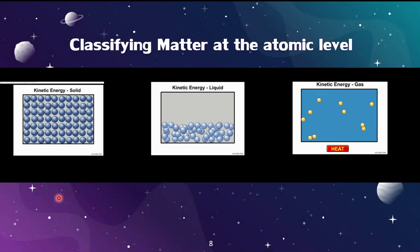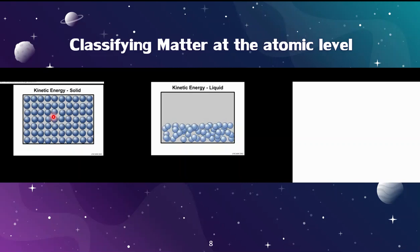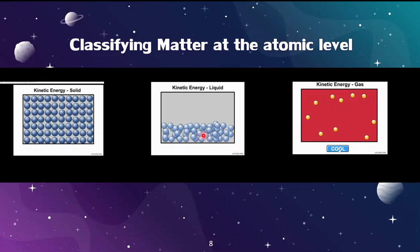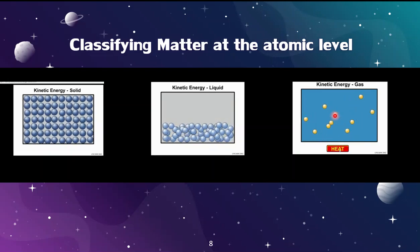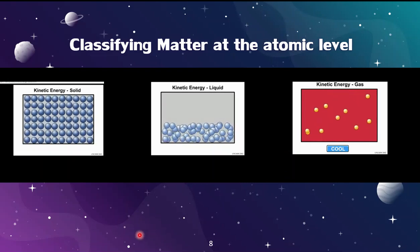This slide shows states of matter depicted at the atomic level. The atoms of the solid are slightly vibrating. In the liquid state, there is less room between the atoms. In the gaseous phase, you can see the high kinetic energy the atoms have and the distance between atoms is much greater. This is one way to classify matter based on its state.